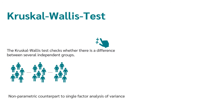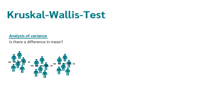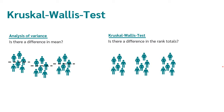The Kruskal-Wallis test is the nonparametric counterpart of the single-factor analysis of variance. There is an important difference between the two tests: the analysis of variance tests if there is a difference in means — we calculate the mean of the groups and check if all the means are equal. With the Kruskal-Wallis test, on the other hand, we don't check if the means are equal; we check if the rank sums of all the groups are equal.